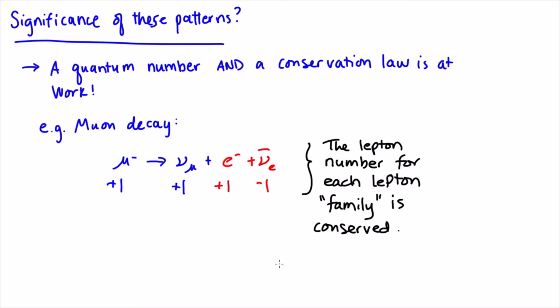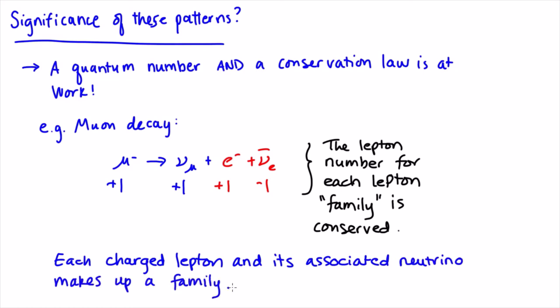As it turns out, all the reactions that involve leptons follow this rule. So this leads to our first new conservation law: in any reaction, the lepton number for each lepton family must be conserved. This conservation law is in addition to the conservation laws we've already learned either in this module or in previous ones.